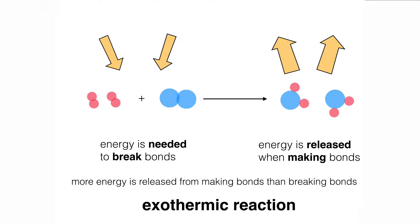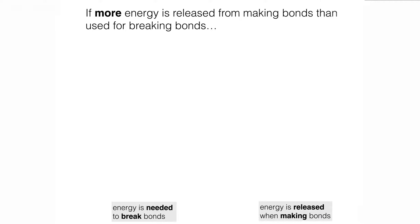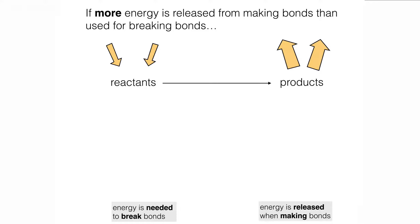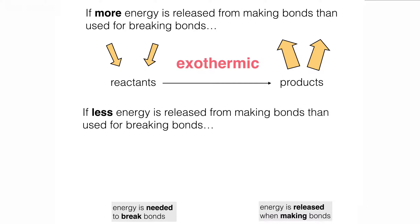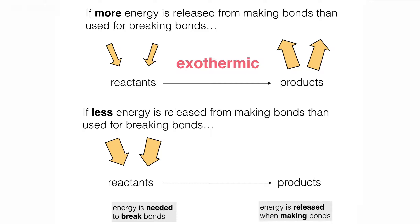We could have a different situation where the reaction is endothermic, but let's just take a look at a summary of how we figure out an endothermic or exothermic reaction. If more energy is released from making bonds than used for breaking bonds — looking at our reactants and products — there's more energy used in breaking the bonds than released from making the bonds in the products: this reaction is exothermic. On the other hand, if there is less energy released from making the bonds than used for breaking the bonds, and we can see there is more energy used for breaking than released from making bonds, we have an endothermic reaction. As we know, endothermic reactions take in heat energy from the surroundings.